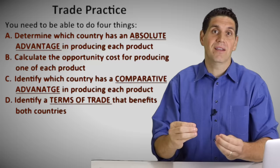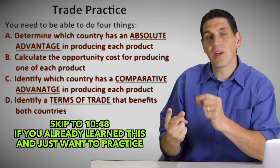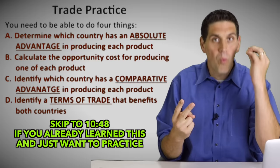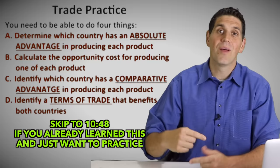Number one, you have to be able to identify the absolute advantage — which country is better at producing stuff. Then you have to be able to calculate something called per unit opportunity cost, or the opportunity cost of producing one of a product for that individual country — not 10 or 12 of them, but one. Number three, figure out who has a comparative advantage. Number four, you have to do something called terms of trade. I'm going to practice these concepts again and again.